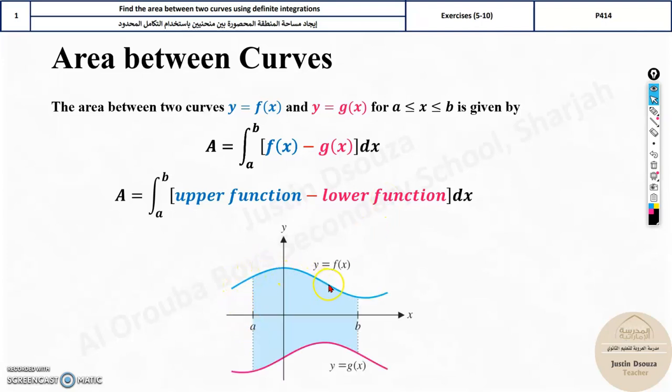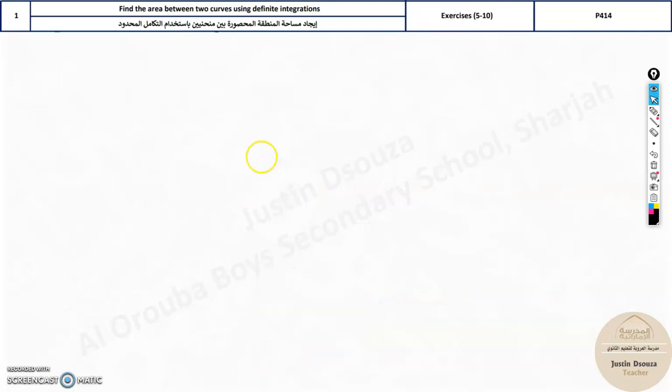Which function minus which other function? It's always the upper function minus the lower function. For example, this is upper function. You need to subtract the lower function from this. Up minus down, top minus the bottom. Now here we have the problem: find the area bounded by the graphs of y equals 3 minus x and y equals x squared minus 9.